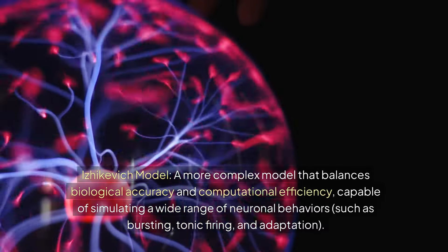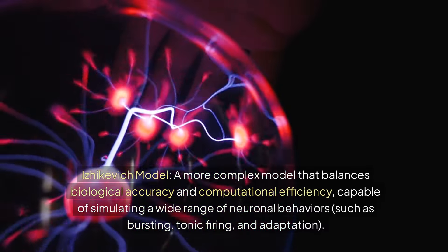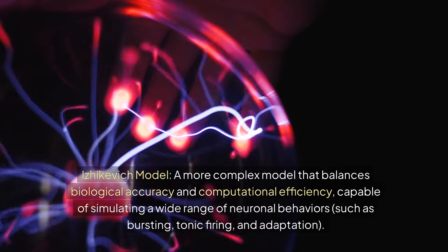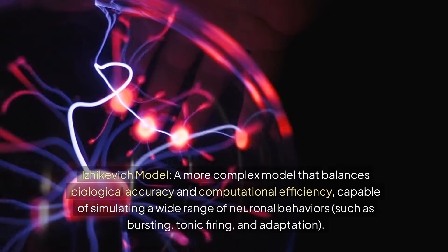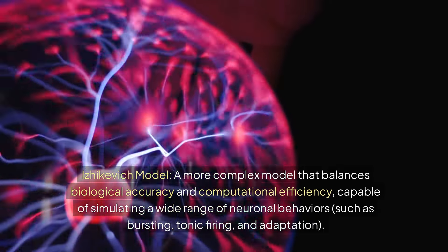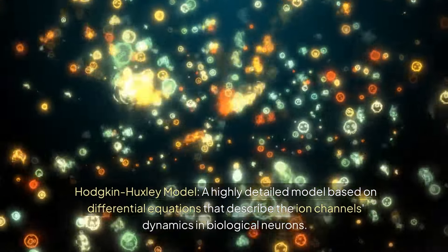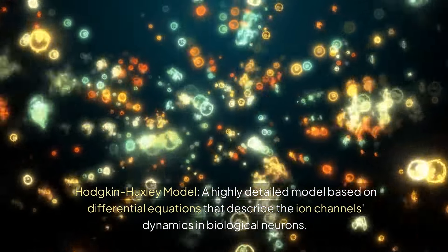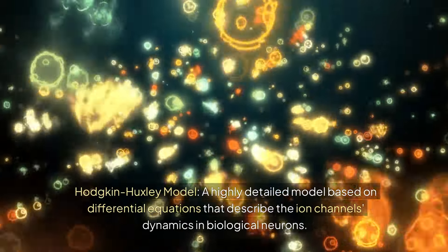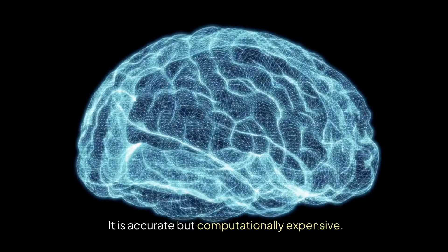The Izhikevich model is a more complex model that balances biological accuracy and computational efficiency, capable of simulating a wide range of neuronal behaviors such as bursting, tonic firing, and adaptation. The Hodgkin-Huxley model is a highly detailed model based on differential equations that describe the ion channel dynamics in biological neurons. It is accurate but computationally expensive.